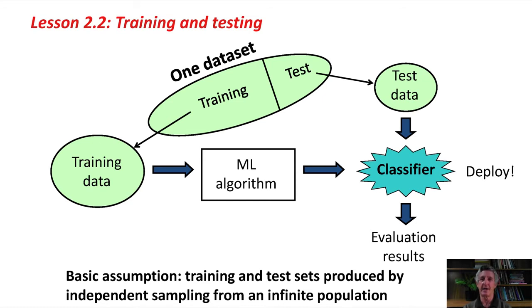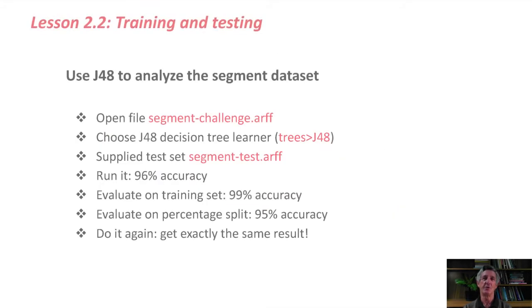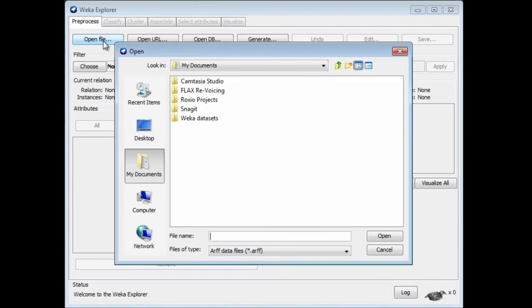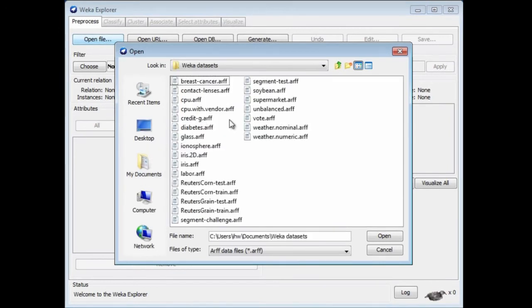If it is the same data, then your evaluation results are misleading. They don't reflect what you should actually expect on new data when you deploy your classifier. Here we're going to look at the segment dataset, which we used in the last lesson. I'm going to open the segment challenge.